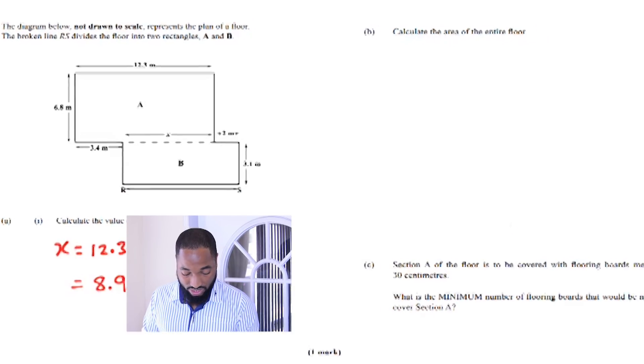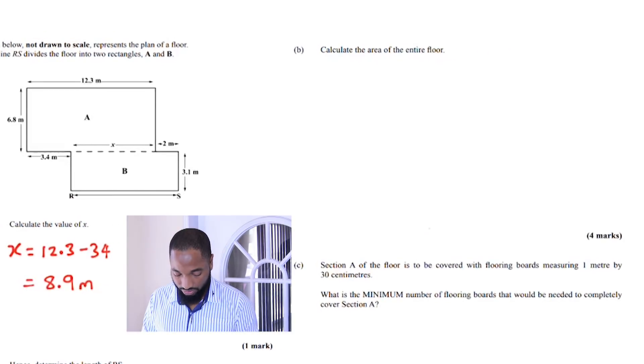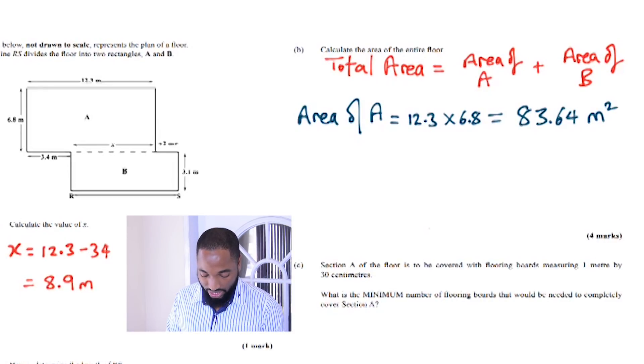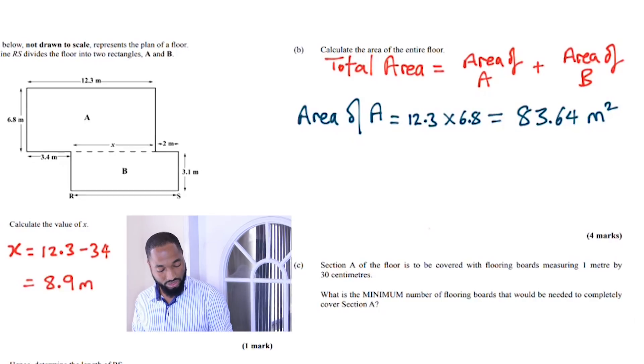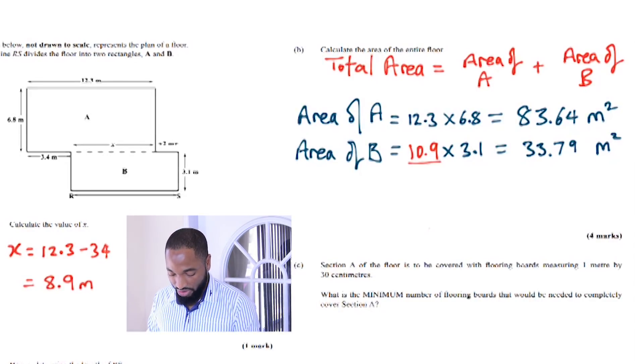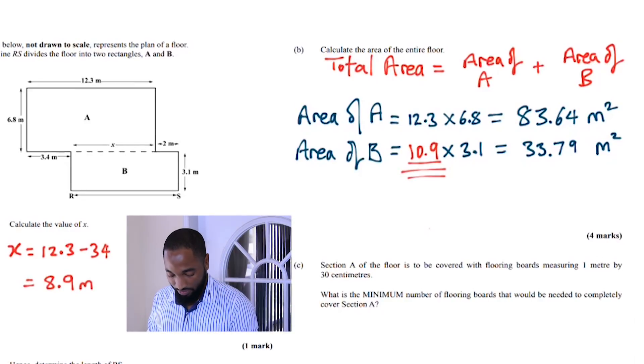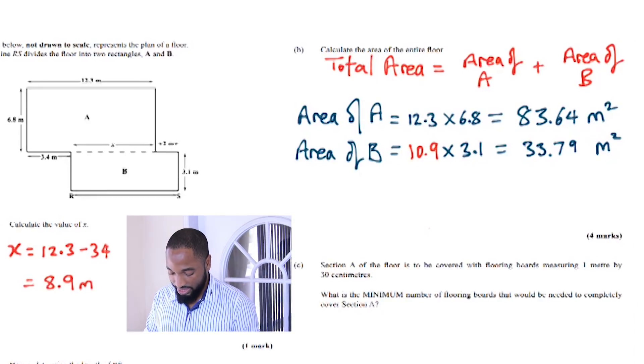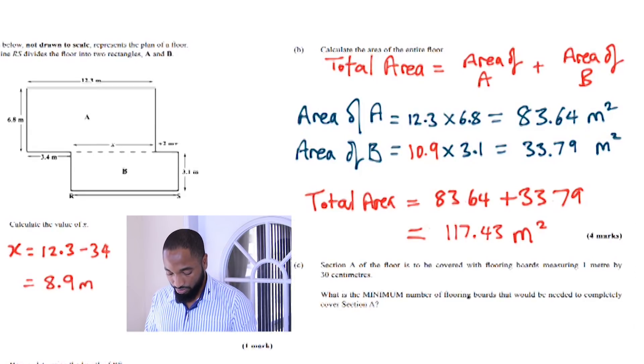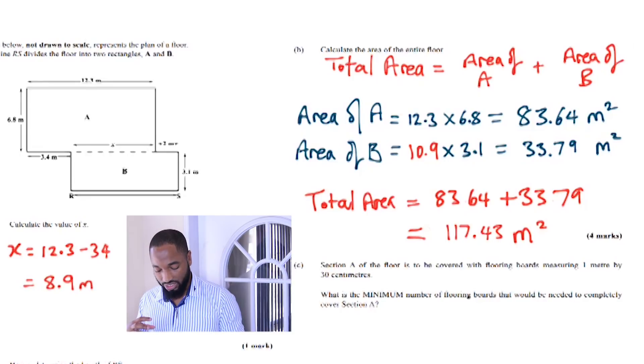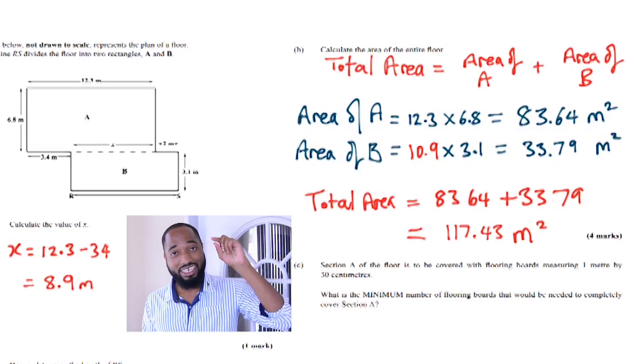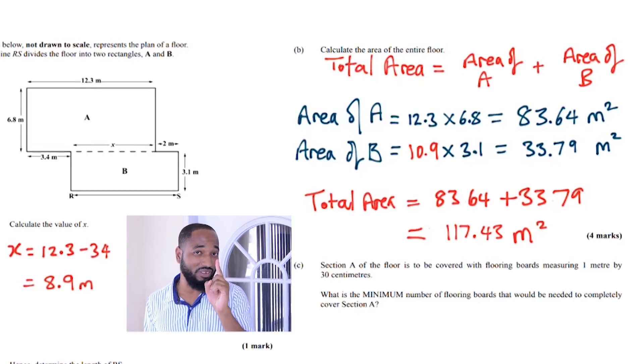Area of A plus area of B. Area of A is 12.3 by 6.8, which equals 83.64 meters squared. Area of B: this 10.9 here came from before because that's RS. Area of B is 10.9 times 3.1. Total area: sum of them, and you get the answer. That's four marks. Remember, every mark in Paper 3 is one percent of your final mark.